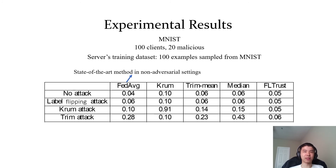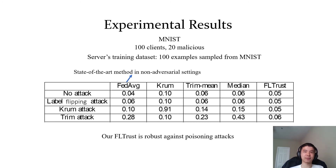This table shows the results. Each row represents an attack and each column corresponds to a federated learning method. In particular, FedAverage is the state-of-the-art method in non-adversarial settings. The numbers in the table are the testing error rates of the global models learned by different methods under different attacks. As we can see, our FLTrust is robust against various poisoning attacks — the testing error rates of FLTrust under attacks are similar to the testing error rate of FedAverage under no attacks.